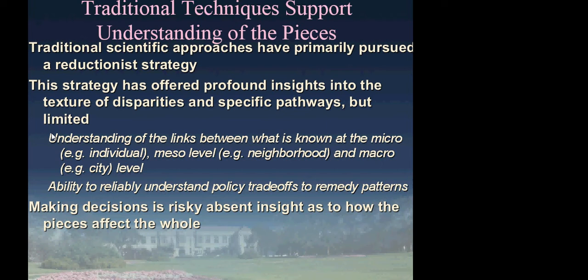Traffic jams are a collective phenomenon. They're not about the drivetrain of one individual, not about its engine type, not purely about the curvature of the roadway or the networks of streets. They're an entangling of all those issues. People slow down in adverse weather and around curves; surely cars breaking down has something to do with traffic jams. But if you want to understand traffic jams, it's not just about the pieces. You have to understand how the pieces combine to form the whole.